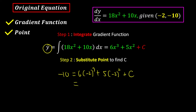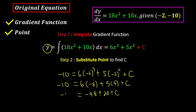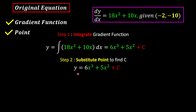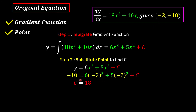Solving step by step: 6 times negative 8 plus 5 times 4 plus c equals negative 10, so negative 48 plus 20 plus c equals negative 10, giving negative 28 plus c equals negative 10. Therefore c is equal to 18. Substituting one of the given points and solving the linear equation, we get c equals 18.